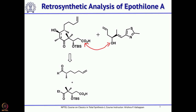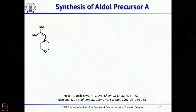Looking at the ethyl ketone, one can generate an anion on the CH2CH3 group; if that anion attacks the aldehyde, you get this aldol product. This allylic alcohol can be obtained from an alpha-beta unsaturated aldehyde through chiral allylation. Now let us see how Nicolaou's group made all these precursors.